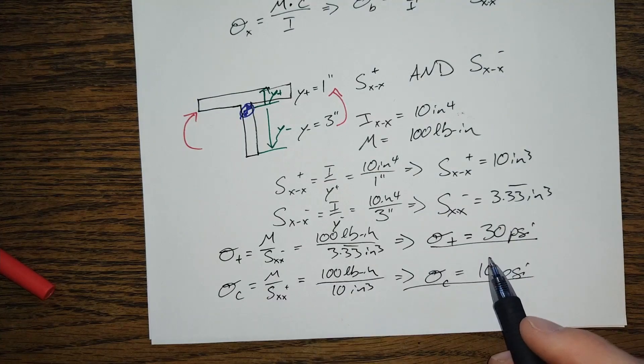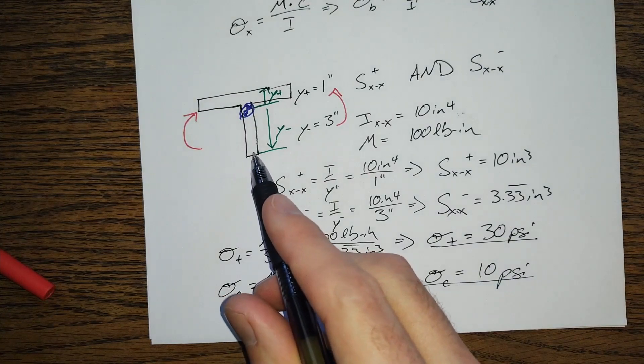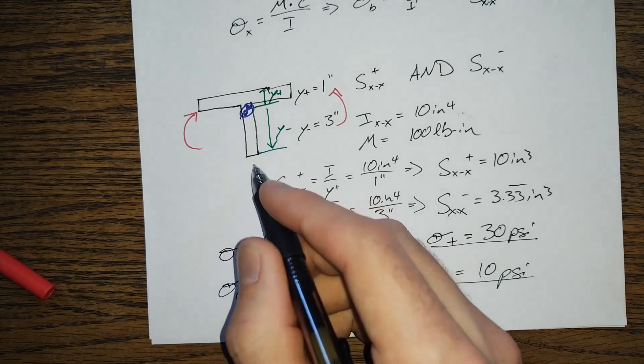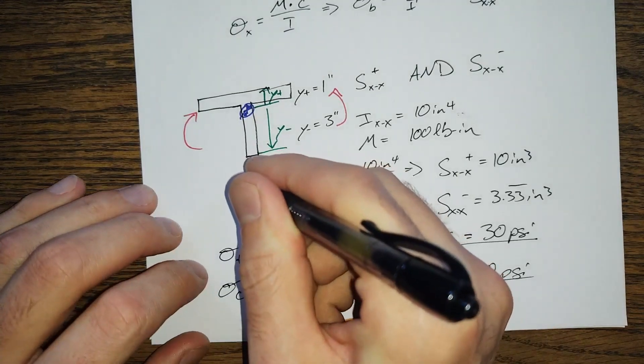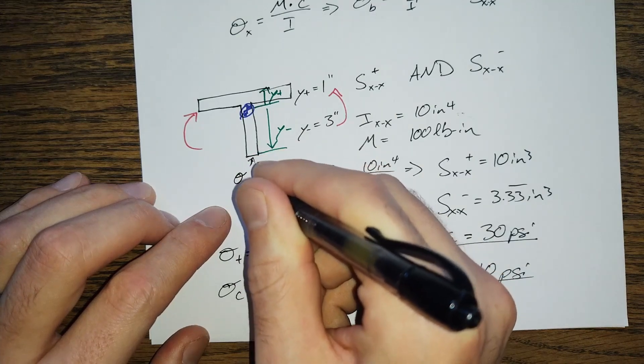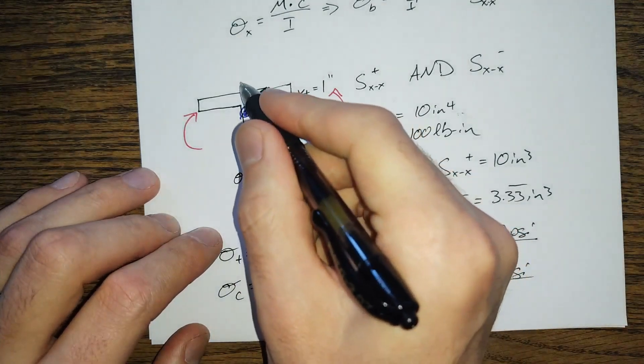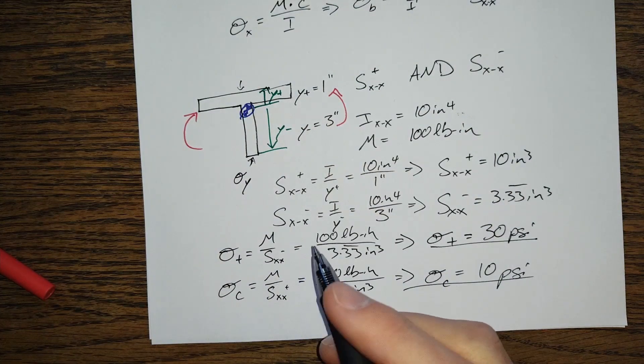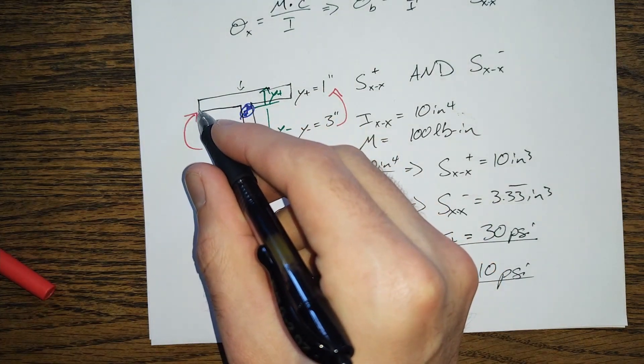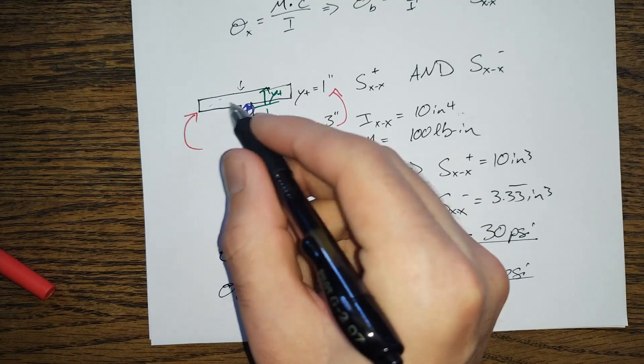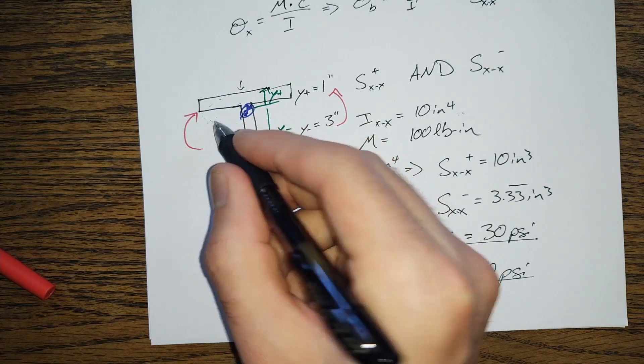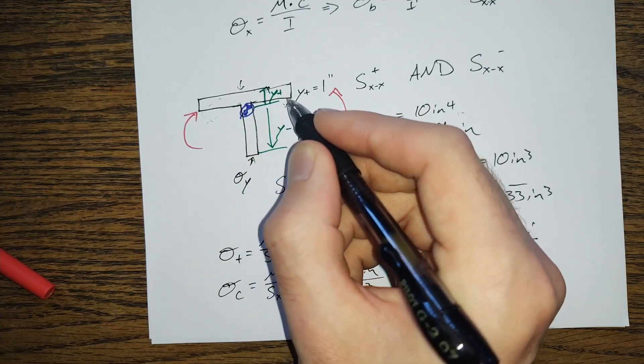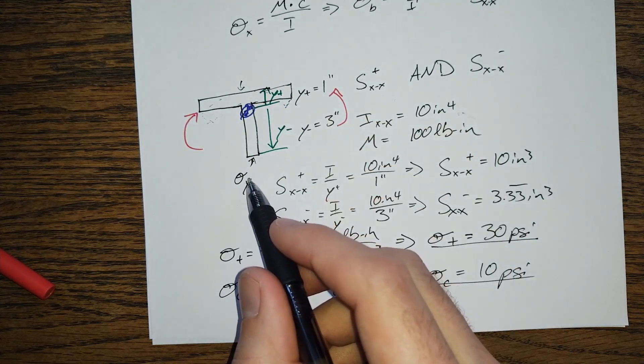But, this can be important because tensile buckling doesn't matter, it's not a thing. This is going to be limited by the yield stress. But, up on this edge, you're potentially going to have buckling concerns where this could bow down as it gets stressed under compression. And, that could result in a loss of capacity long before we hit the actual tensile yield capacity of the material.